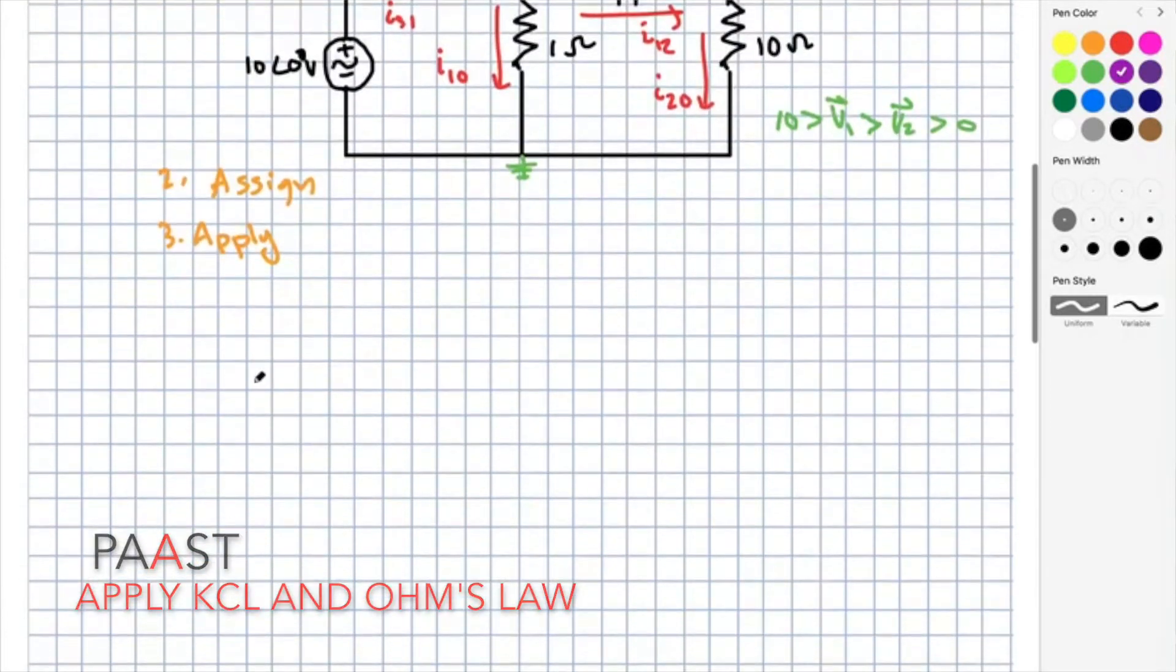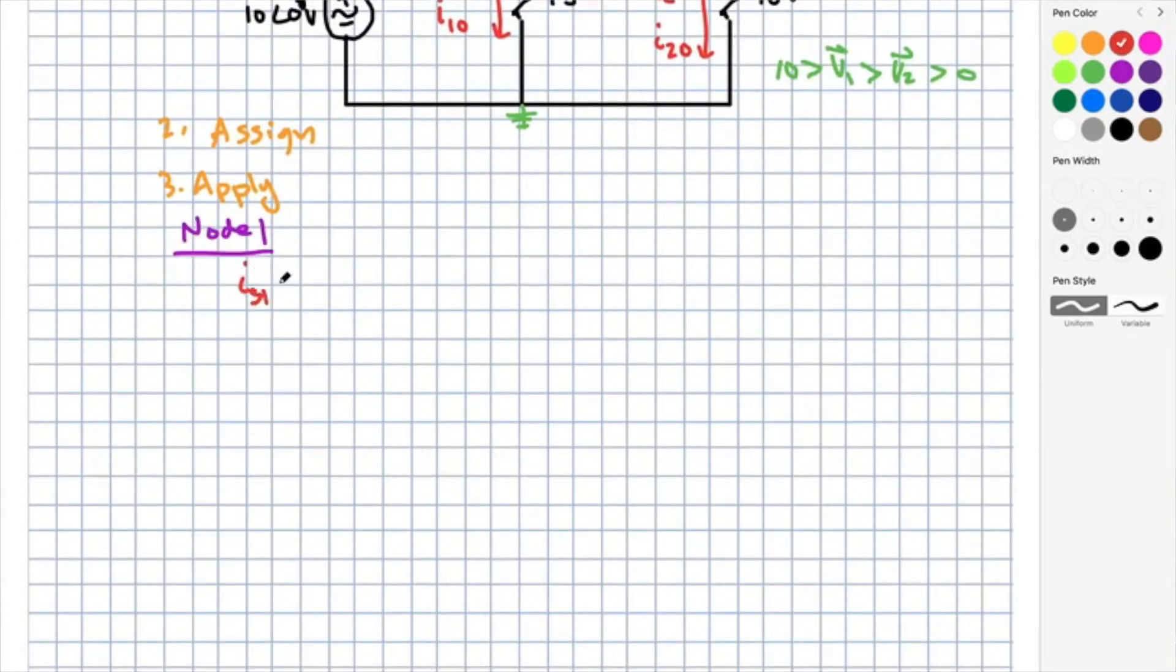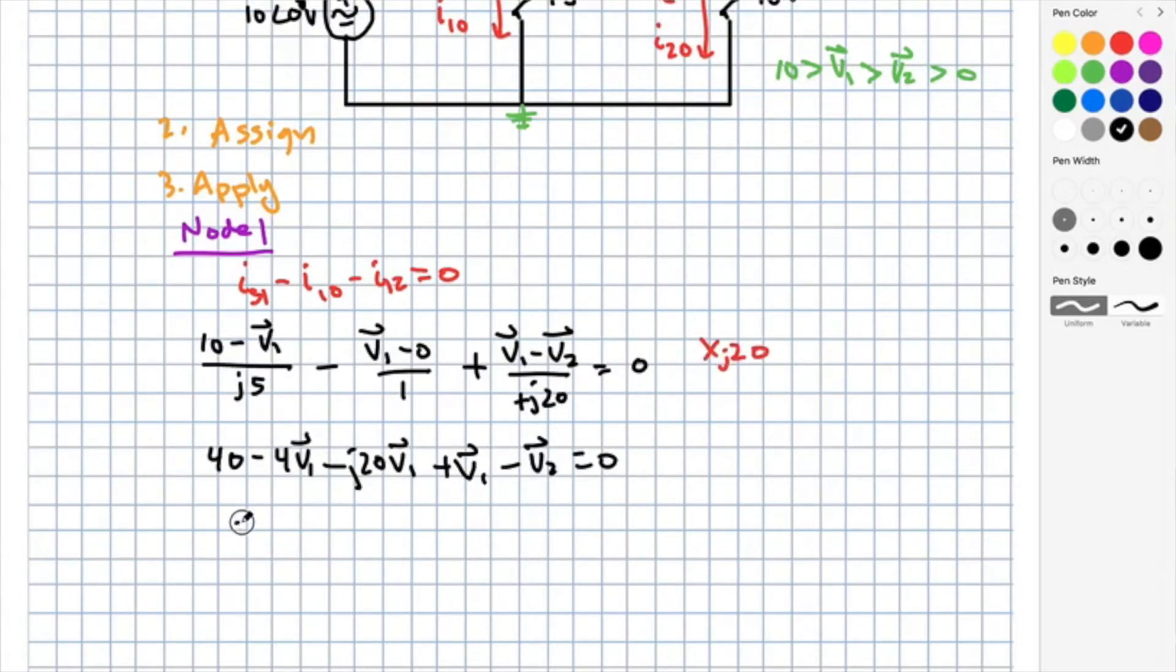On to step three, apply. At node one, we have is1 coming in, i10 going out, and i12 going out. Applying the Ohm's law expression, we get 10 minus v1 over j5 minus v1 minus 0 over 1 minus v1 minus v2 over minus j20 equal to 0. Multiplying through by j20 and collecting terms, we're going to arrive at 3 plus j20 times v1 plus v2 equals 240. Let's call this equation two.